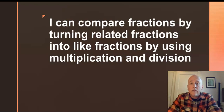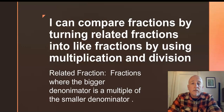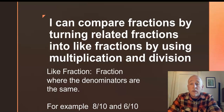A related fraction is a fraction where the bigger denominator is a multiple of the smaller denominator. So for instance, I have the fractions 4 fifths and 6 tenths. Well, 10 is a multiple of 5, so you'll notice that 5 times 2 makes 10 — those fractions are related to each other. A like fraction is a fraction where the denominators are the same, so 8 tenths and 6 tenths, because both denominators are 10.